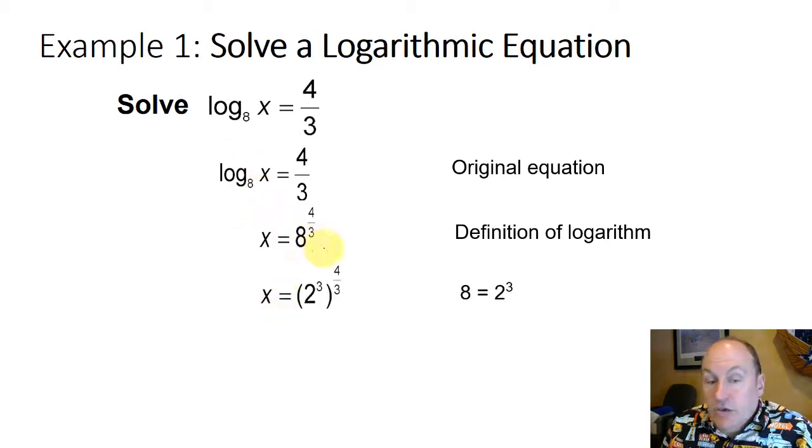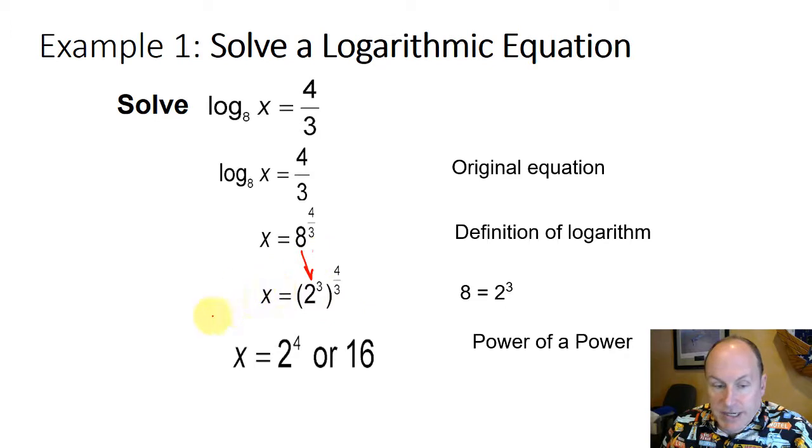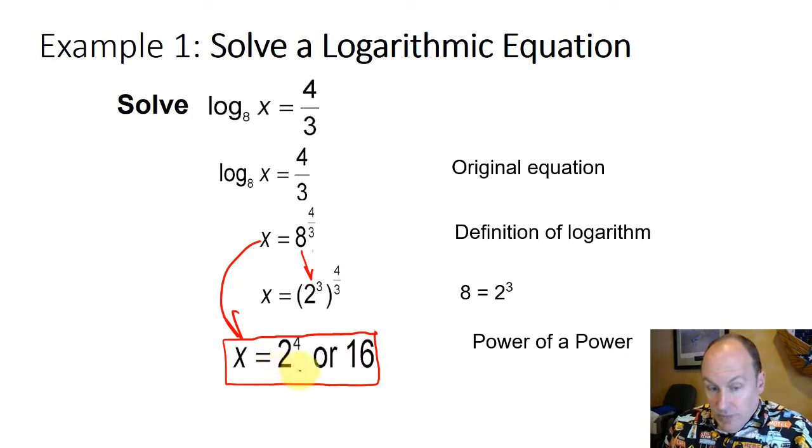You can evaluate that directly on your calculator, or you can rewrite 8 as 2 to the 3rd. And so 2 to the 3rd to the 4 thirds will be 2 to the 3 times 4 over 3, which is 2 to the 4th, or 16. Again, you could go directly from x equals 8 to the 4 thirds to 16 on your calculator.